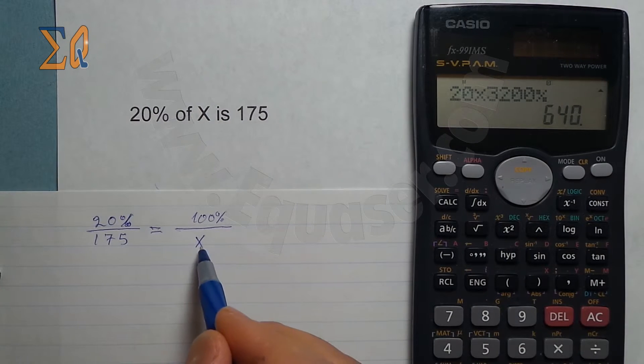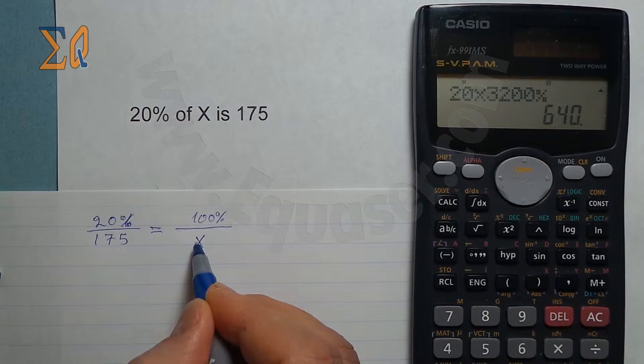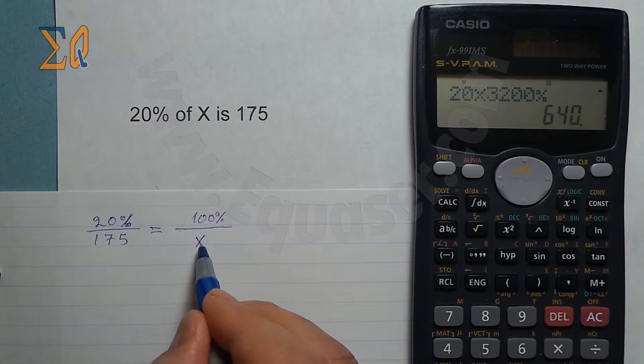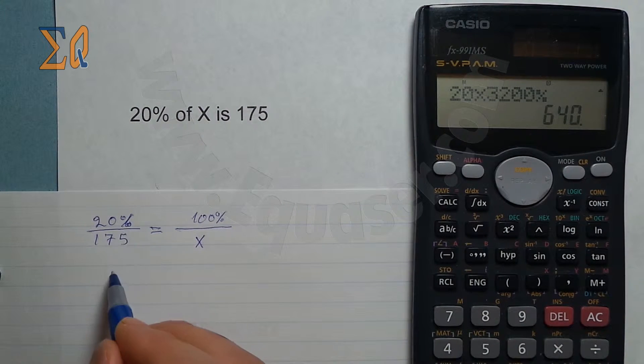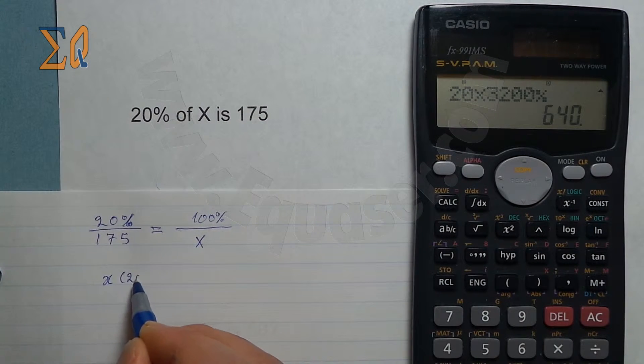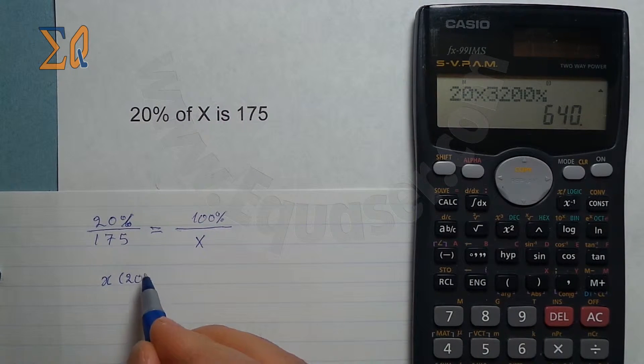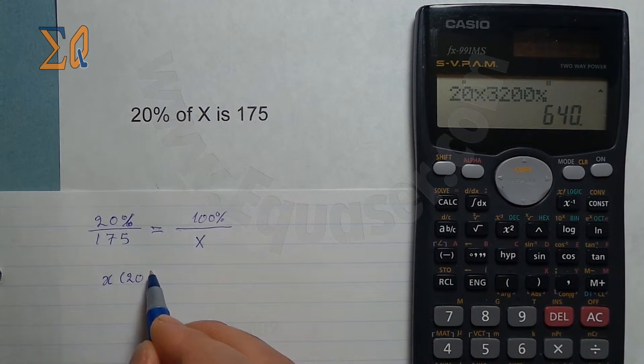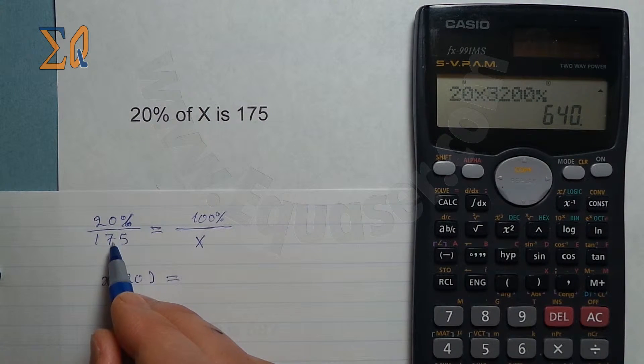Now this is cross multiplication. The numerator of one term multiplies by the denominator of the other. So I'm going to write X times 20%, X times 20%, equals 175 times 100.